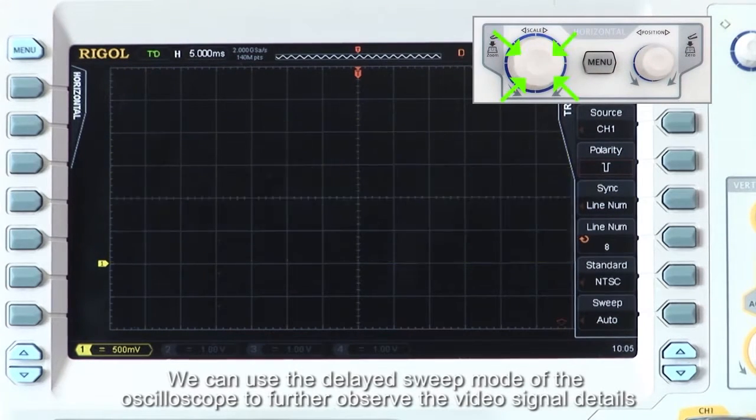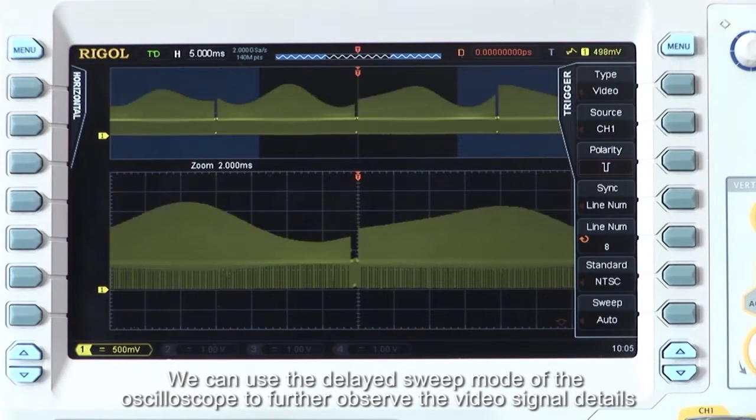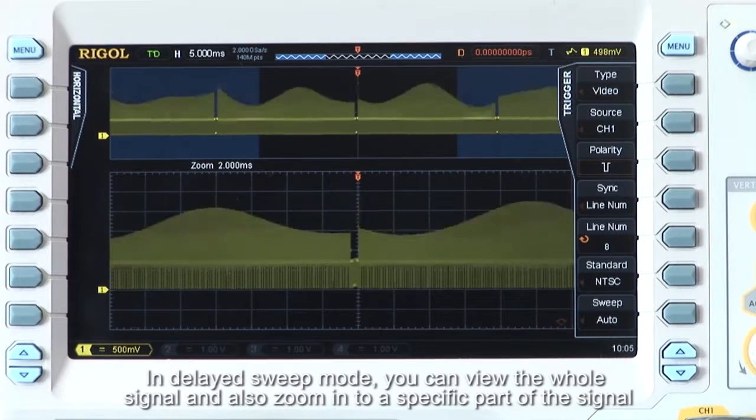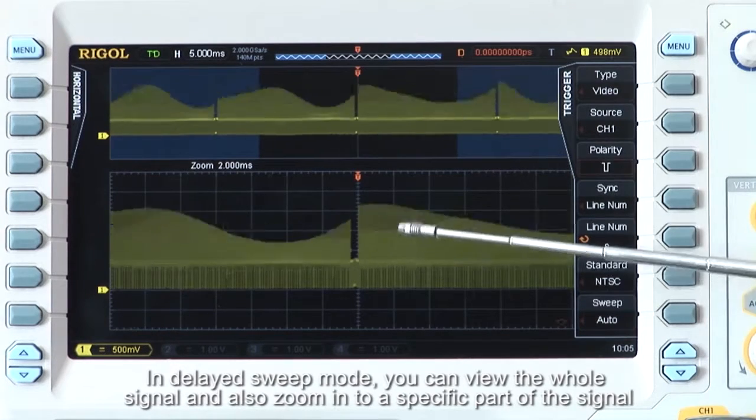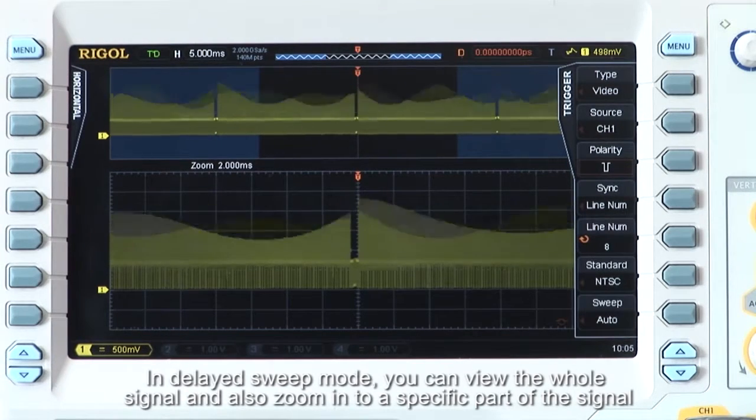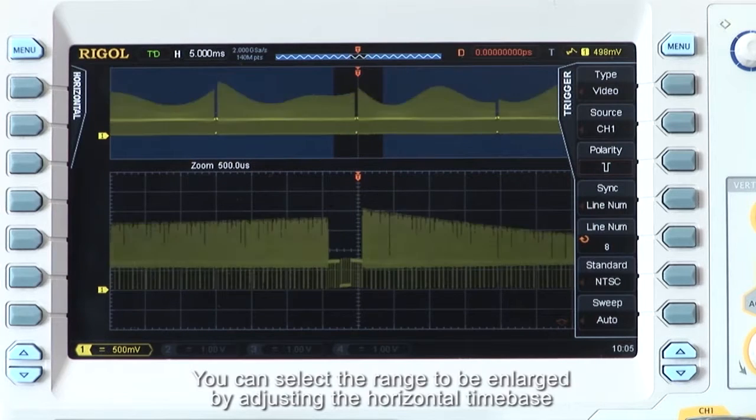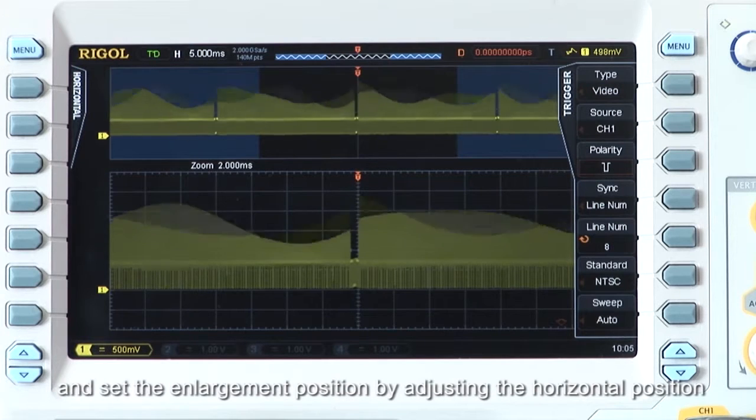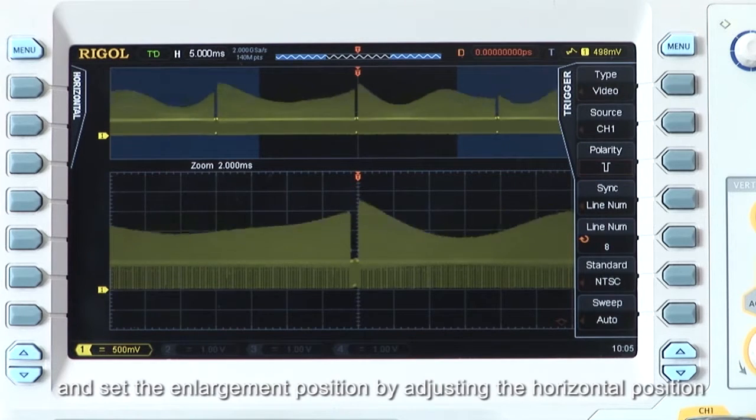We can use the delayed sweep mode of the oscilloscope to further observe the video signal details. In delayed sweep mode, you can view the whole signal and also zoom in to a specific part of the signal. You can select the range to be enlarged by adjusting the horizontal time base and set the enlargement position by adjusting the horizontal position.